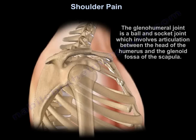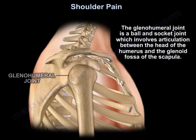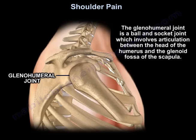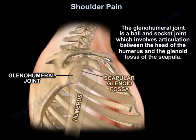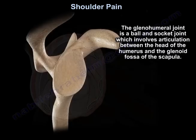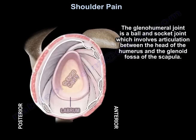The glenohumeral joint is a ball and socket joint which involves articulation between the head of the humerus and the glenoid fossa of the scapula.